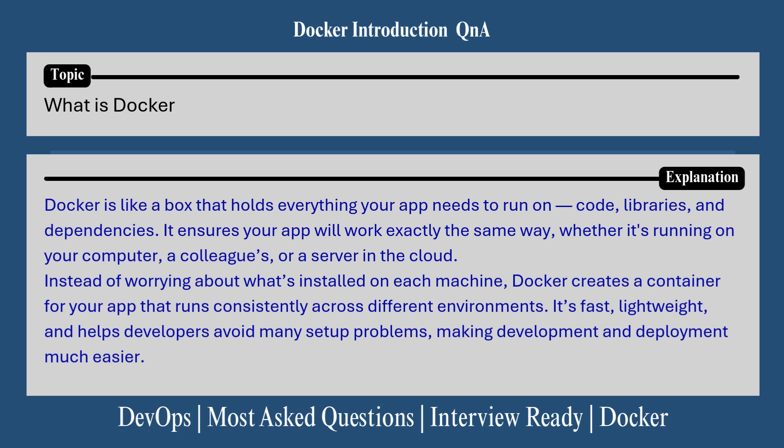Let's have a quick look at what Docker is. Docker is like a box that holds everything your app needs to run — code, libraries and dependencies. It ensures your app will work exactly the same way whether it's running on your computer, a colleague's, or a server in the cloud. Instead of worrying about what's installed on each machine, Docker creates a container for your app that runs consistently across different environments. It's fast, lightweight and helps developers avoid many setup problems, making development and deployment much easier.